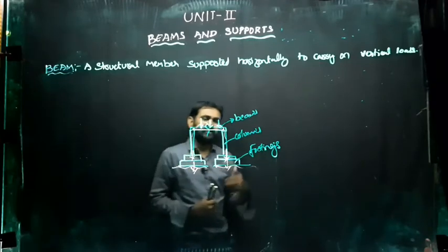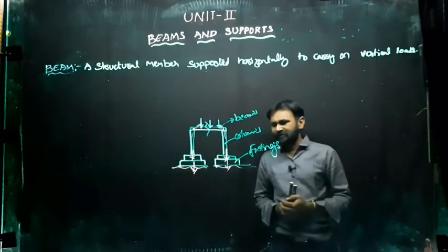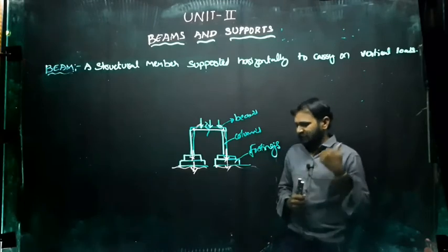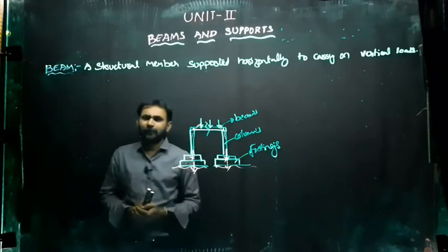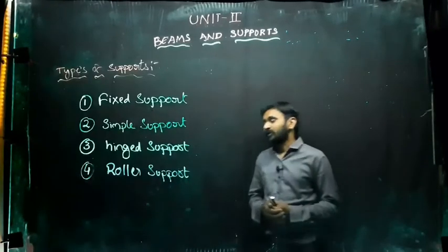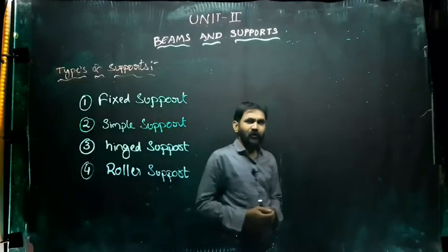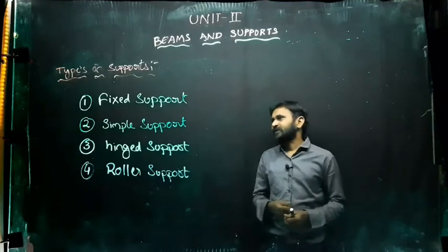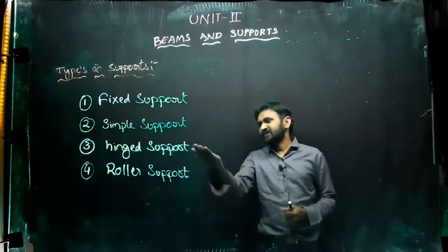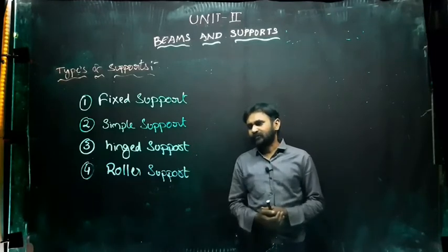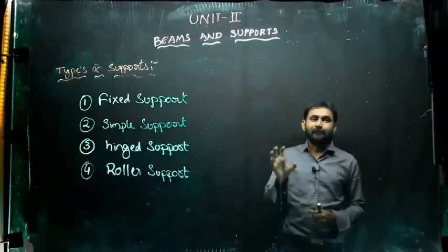So what are the types of beams? What are the types of supports? And how is the beam going to fail? We will see in the coming classes. Let us see the types of supports on the beams. There are four types of supports: fixed support, simple support, hinged support, and roller support. These are the four types of supports which support the beam.